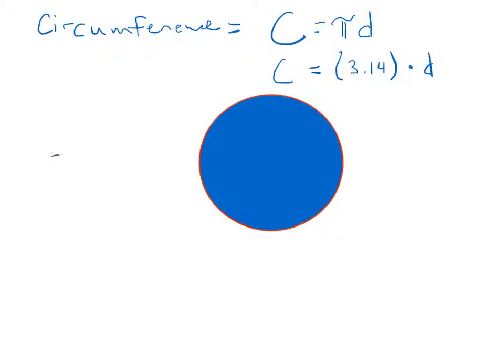And remember, we can substitute sometimes 22 over 7 for 3.14. Just depends on what your book asks for. If it doesn't ask for anything, use 3.14. Sometimes it will specifically tell you to please use the fraction 22 over 7.